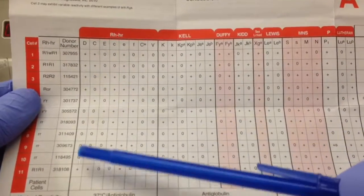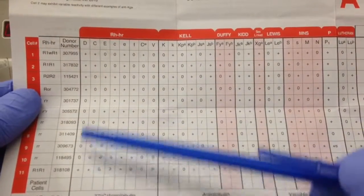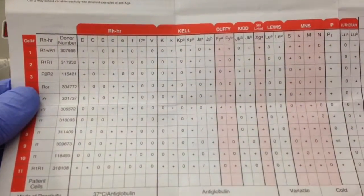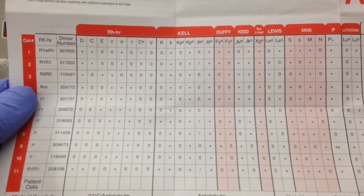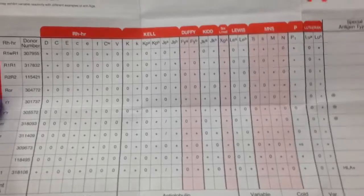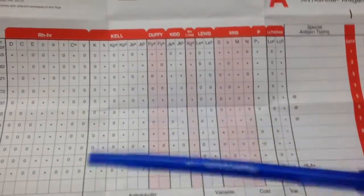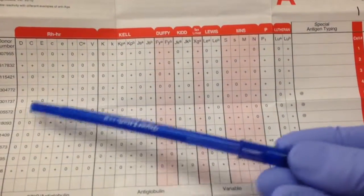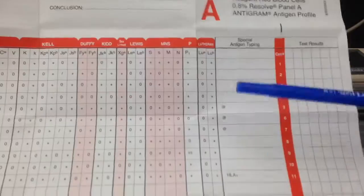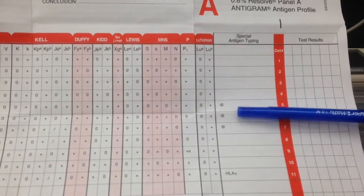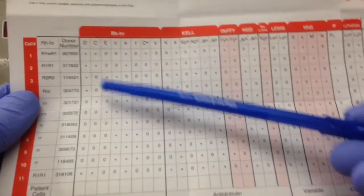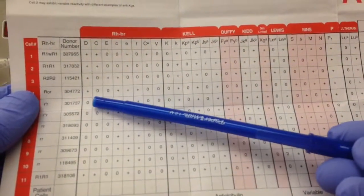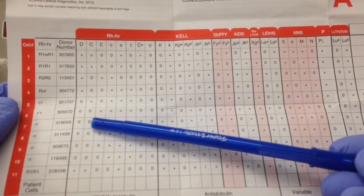What complicates things is that a majority of the cells on an ID panel are positive for D antigen, so they would all be positive with somebody who has anti-D or RhoGAM. Basically, in these cases, what you'll have to pay attention to is some of the Rh-negative or D-negative cells in the ID panel, and they usually mark the ones that you would use for a rule-out.